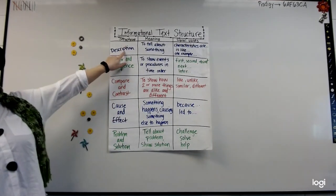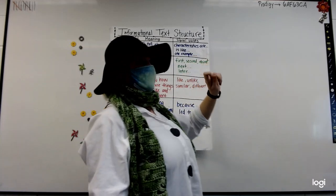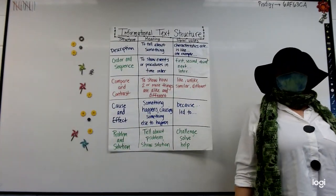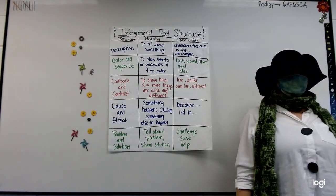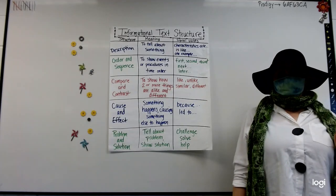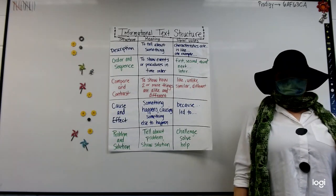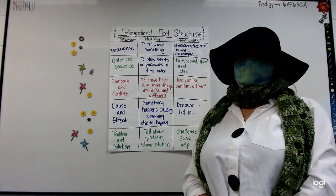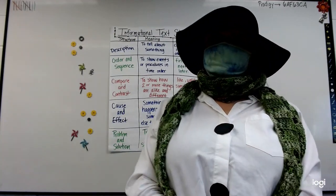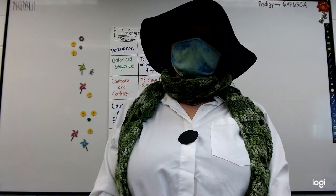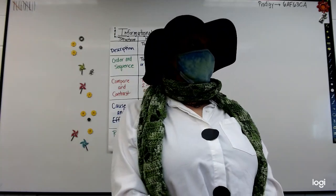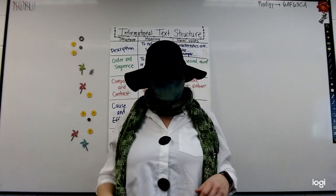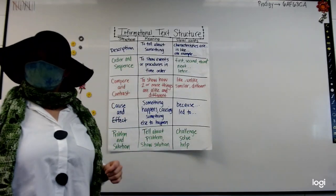The first one is description — to tell about something. Someone I'm about to call is going to give me a topic you could write about descriptively. Chloe, give me a topic I could write about using the descriptive organizing style. Fish? Yeah, I could tell all about a type of fish, right? Great example. Chloe passed.